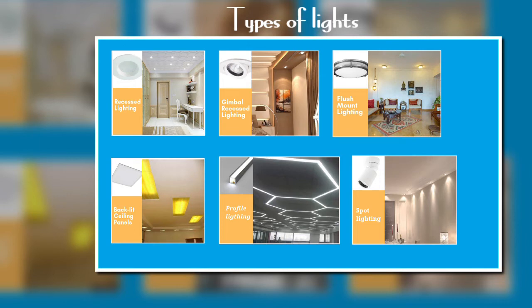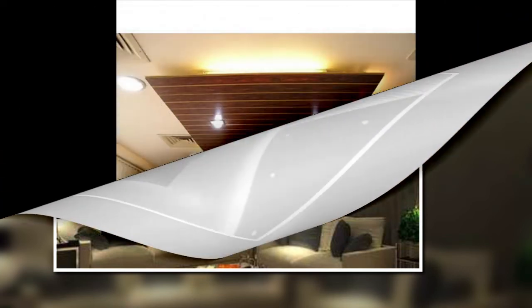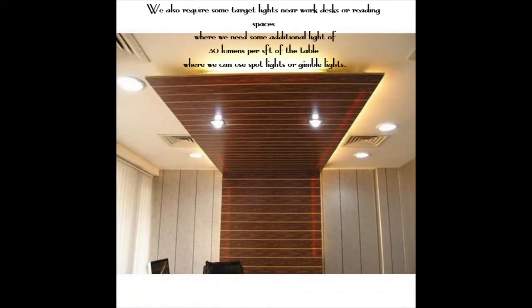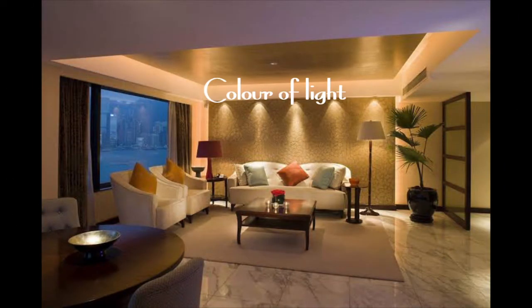There are many types of lights, like cove LED, LED strips, rope profile, and spotlights — each with a different function. Rope lights are used to highlight the borders of the deck by placing them between the main fall ceiling level and the deck. We also require target lights near a work desk or reading spaces, where we need some additional light of 30 lumens per square foot of the table.